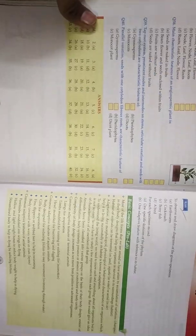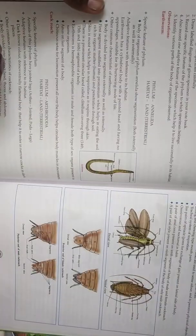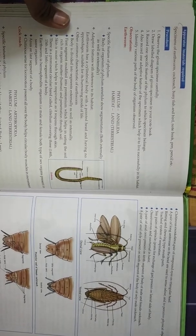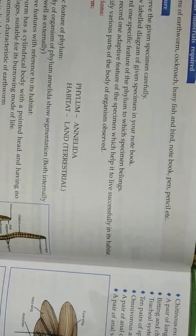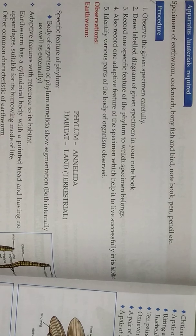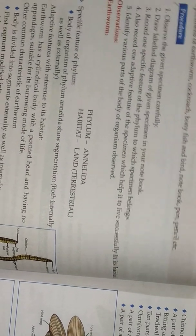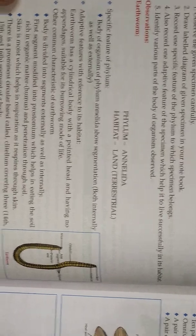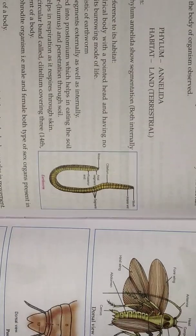And then next page. Apparatus material required. Specimens. Procedure: observe the given specimen carefully. And then earthworm. Here is the earthworm.